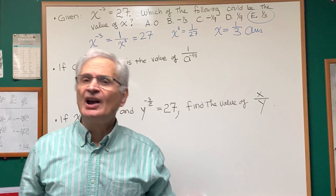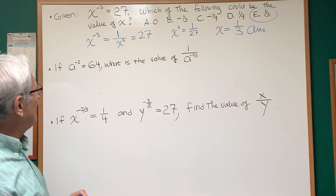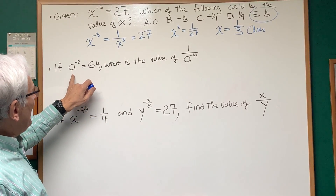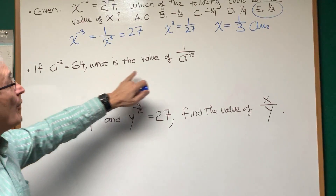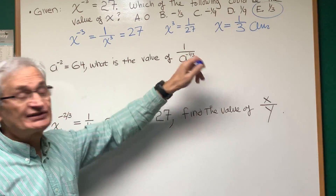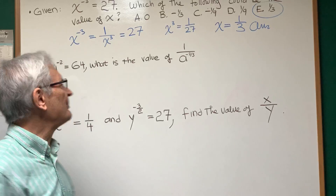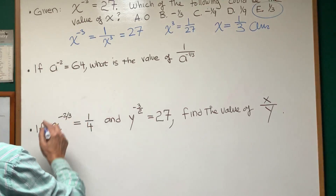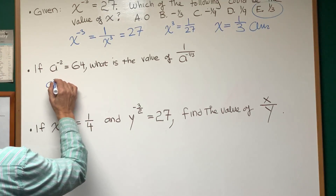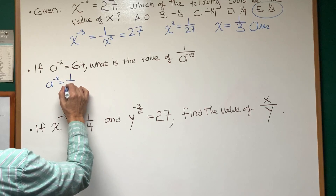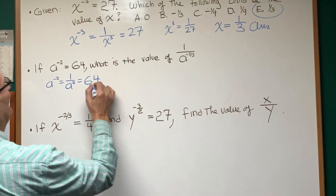It's choice E. In a similar fashion, we go now to the second problem. If a to the negative second power is 64, what is the value of one over a to the minus two thirds? Very similar, a little bit more complicated. A to the minus two is equal to one over a squared, and that's equal to 64.